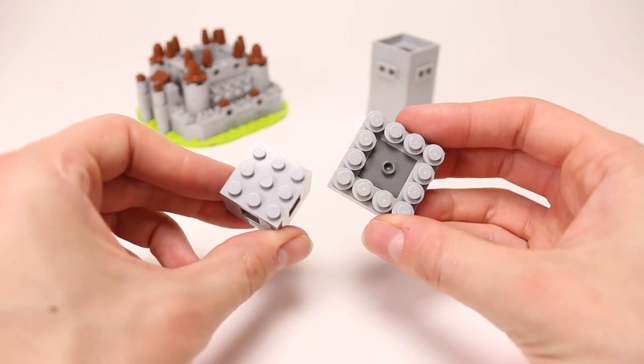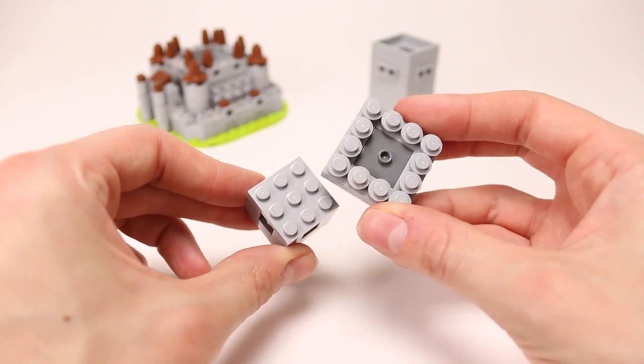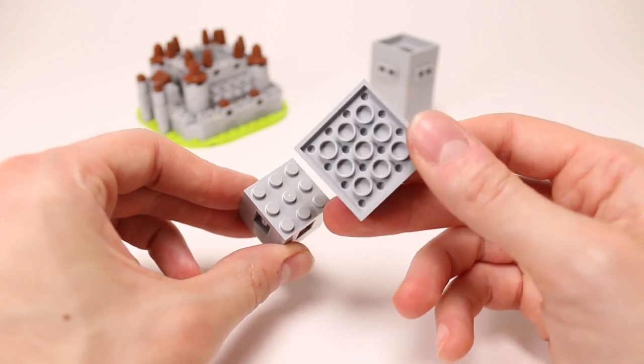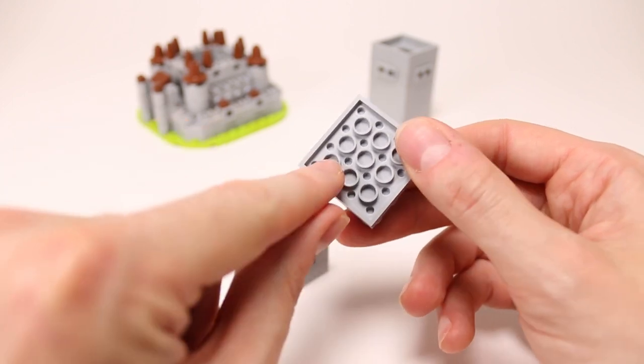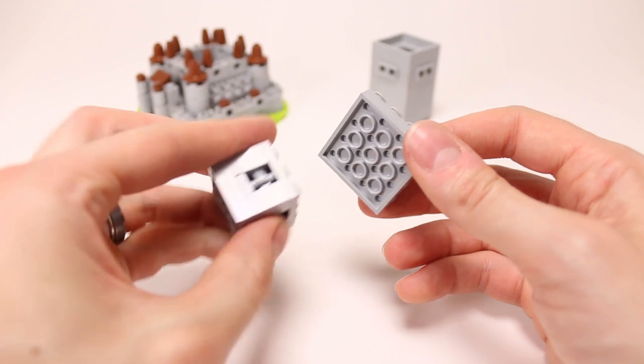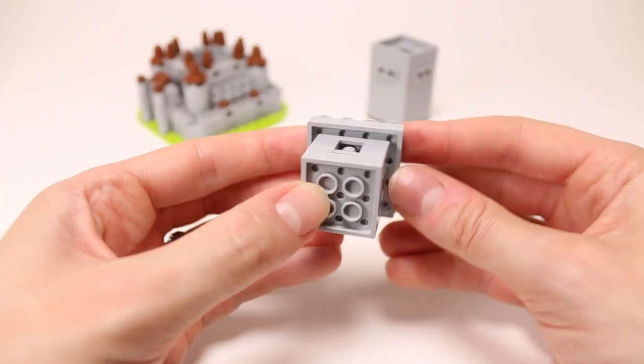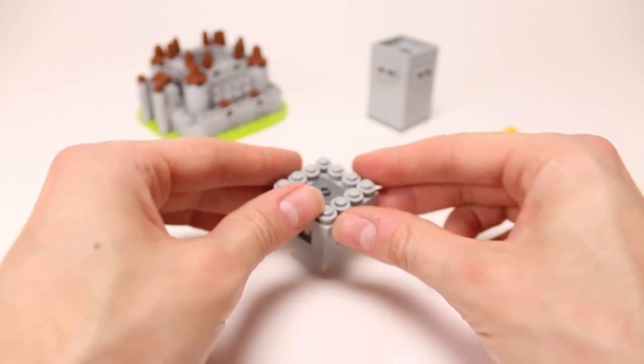Now a fun way to transition from these two is we have a 3x3 grid of studs here. And on the bottom of this plate we have a 3x3 grid of the tubes here in the middle. So when we put those two together we get this really nice half plate offset on all sides and it's very easy to do.